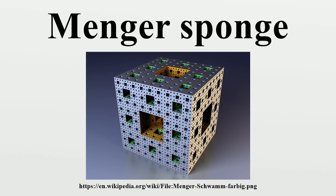Mega Menger is a project aiming to build the largest fractal model. Pioneered by Matt Parker of Queen Mary University of London and Laura Taalman of James Madison University, each small cube is made from six interlocking folded business cards, giving a total of 960,000 for a level-4 sponge. The outer surfaces are then covered with paper or cardboard panels printed with a Sierpinski carpet design. In 2014, 20 level-3 Menger sponges were constructed, which combined would form a distributed level-4 Menger sponge.